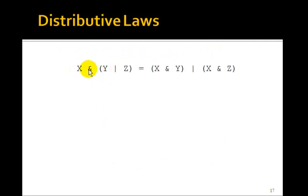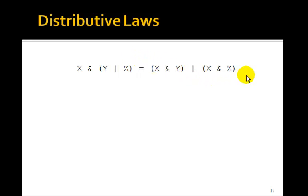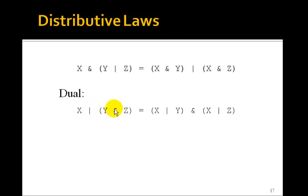Here are the distributive laws. x AND (y OR z) is equal to (x AND y) OR (x AND z) — we can distribute the AND operation over the OR. This looks something like normal algebra, where you factor out an x. But the dual must also be true, so in Boolean algebra, x OR (y AND z) is equal to (x OR y) AND (x OR z) — the OR also gets distributed over the AND. This one isn't true in regular algebra.